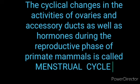The females of placental mammals show cyclical changes in the activities of ovaries, accessory ducts, and hormones during the reproductive phase. In primate mammals, this is called the menstrual cycle.